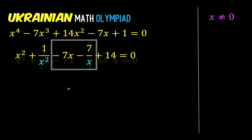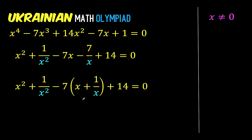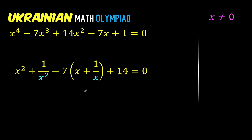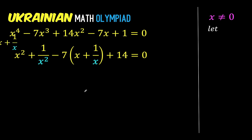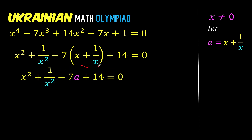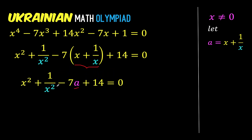Factoring out negative 7 in the boxed terms gives us this result. If you distribute this negative 7 to the binomial, you go back to the original equation. So we have the term x plus 1 over x. Let's use a variable a in place of the expression x plus 1 over x. That way, this entire binomial can be replaced with the variable a.